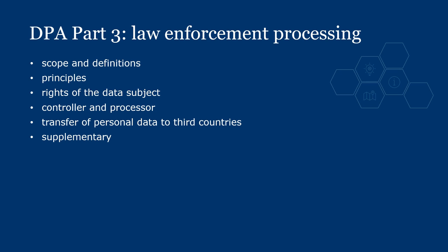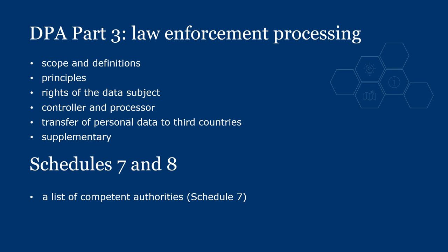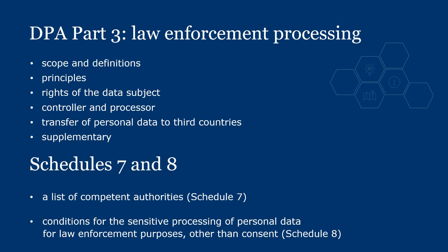Part 3 of the DPA provides its own definitions, principles, and data subject rights relating to law enforcement. In the schedules, the DPA gives a list of competent authorities — these are the organisations which Part 3 applies to — and conditions for sensitive processing for law enforcement purposes, other than consent. Let's now discuss what makes a competent authority and what the law enforcement purposes are.